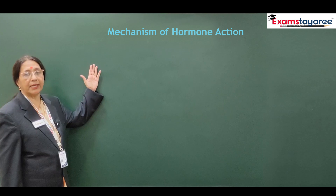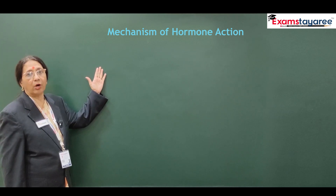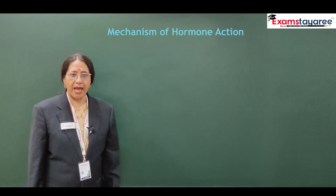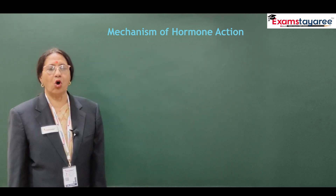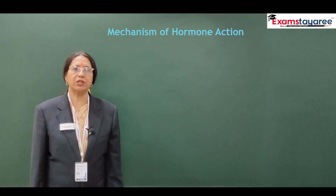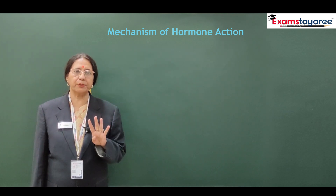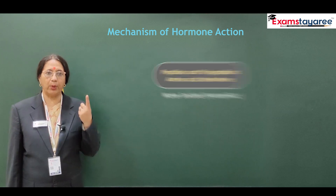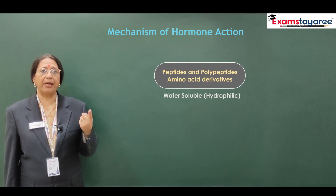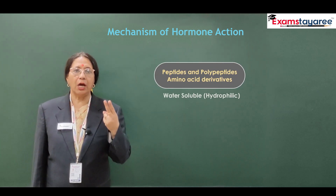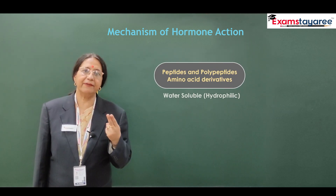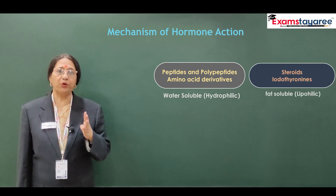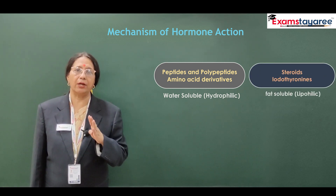So today I am going to tell you about the mechanism of hormone action. As you know, hormones can be categorized into four groups based on their chemical nature: one, peptides and polypeptides; two, amino acid derivatives; three, steroids; and four, iodothyronins.